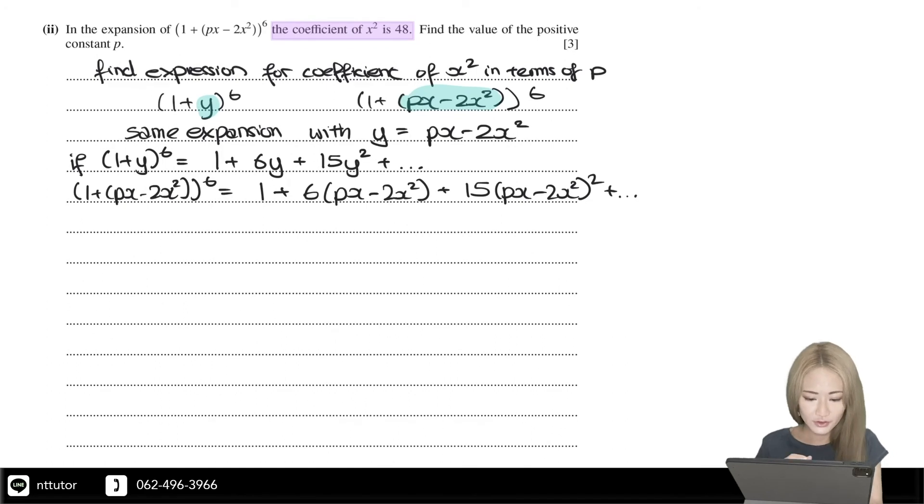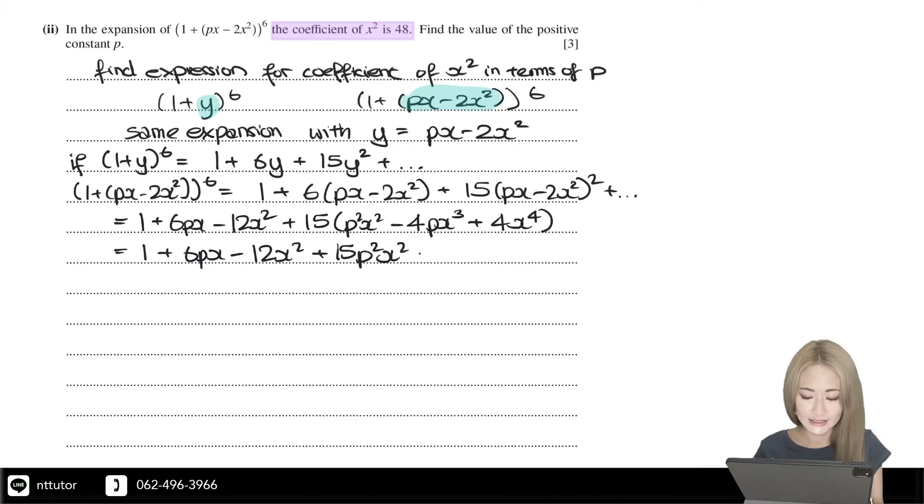If you expand the brackets and simplify it, we get 1 + 6px - 12x² + 15p²x² - 60px³ + 60x^4, and so on.